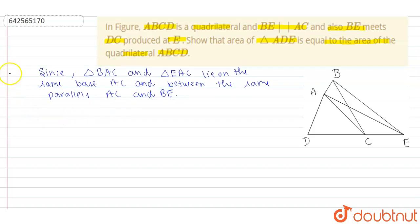So we can write here area of triangle BAC is equal to area of triangle EAC.